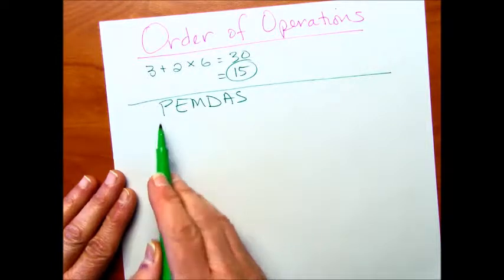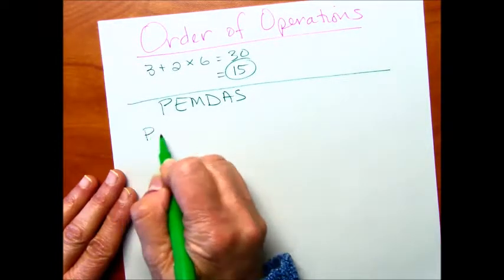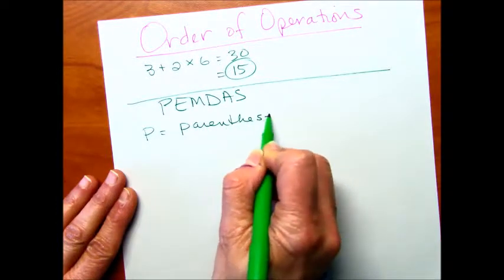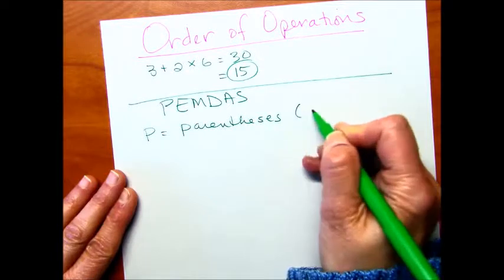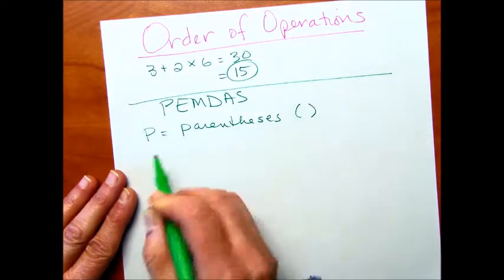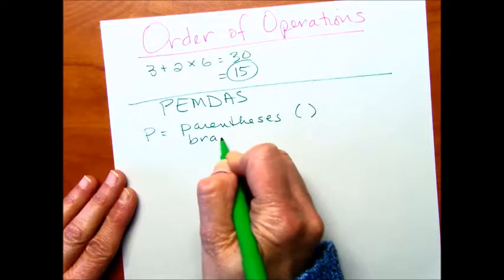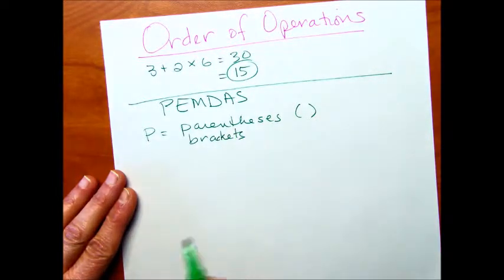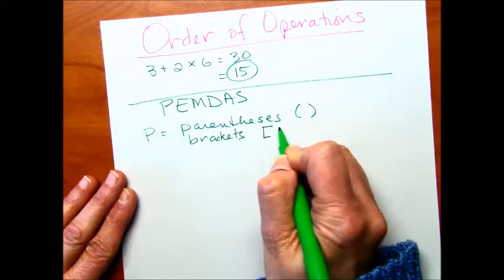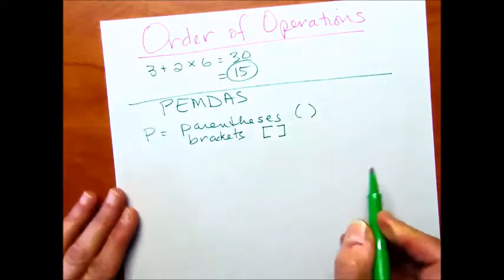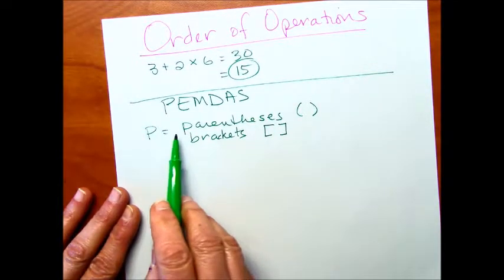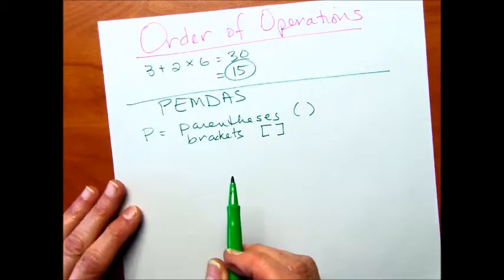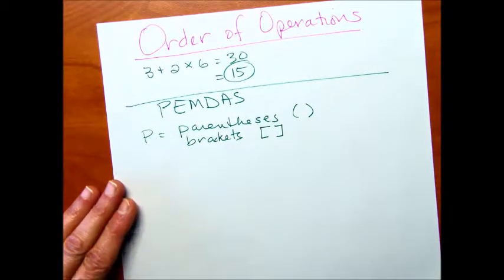So P is going to stand for parentheses. And that's parentheses look like that. It also includes brackets. Brackets look like this, they're a little harder edged. You're probably going to see more parentheses than you will brackets. But let me give you a couple of examples of what I'm talking about here.